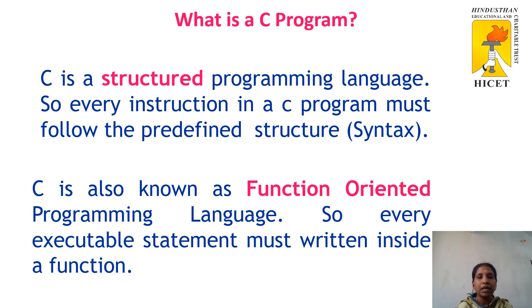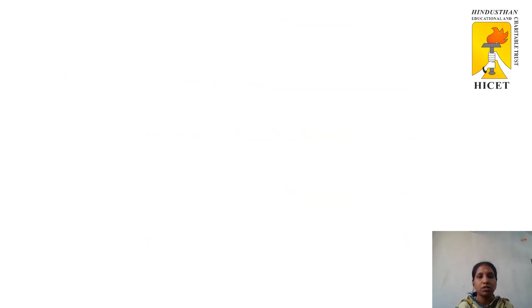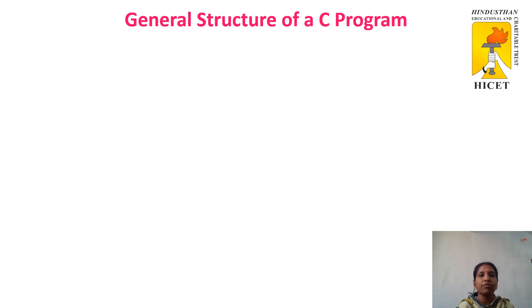C is also called a function-oriented programming language because each and every executable statement of a C language is written inside a specific function, especially main. So this C is also known as a function-oriented programming language. Now we will see the structure of a C program — how to write a C program.